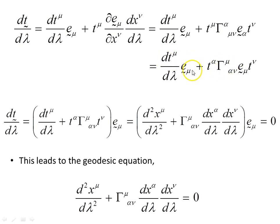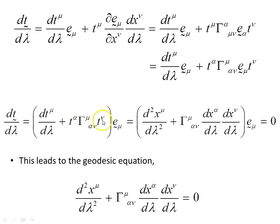We can factor out the basis vectors e_μ. Notice that the dummy indices μ and α can swap places — we're free to name them whatever we like — so that we can factor out e subscript μ. Replacing the tangent vector components back with dx^α/dλ times dx^μ/dλ, and recalling our condition that the derivative of the tangent vector with respect to λ is zero, this leads to the geodesic equation. This object is now set equal to zero.